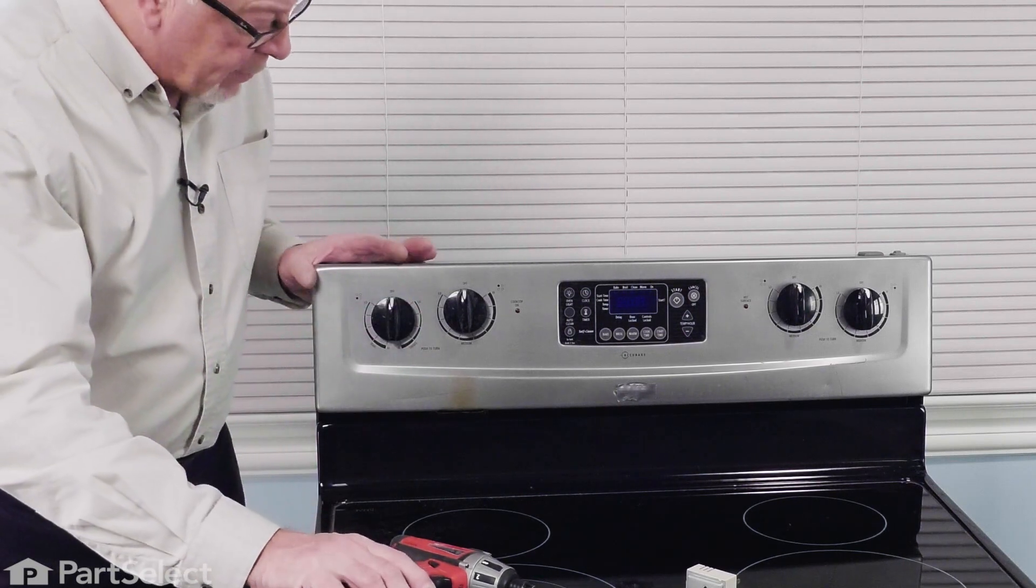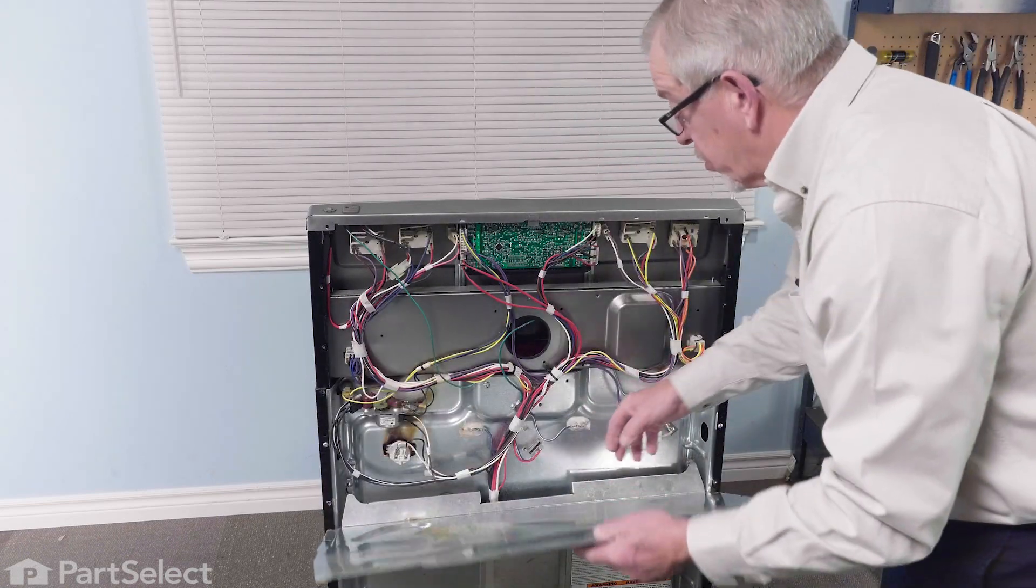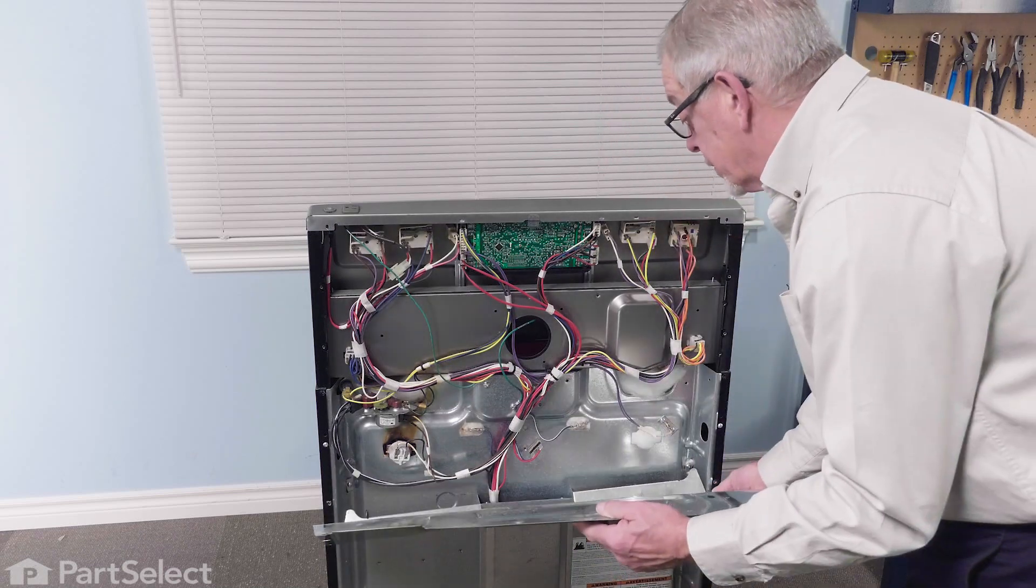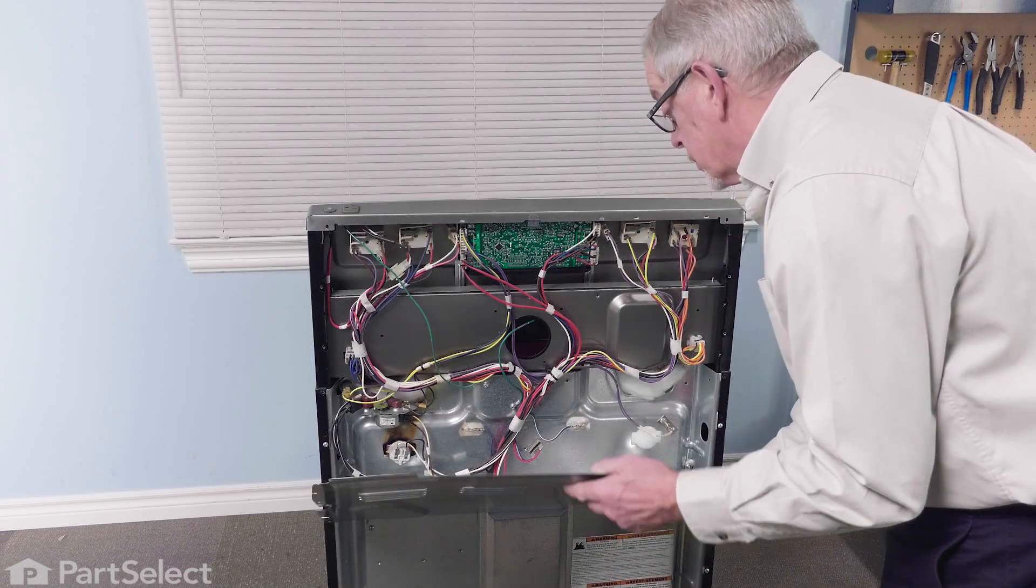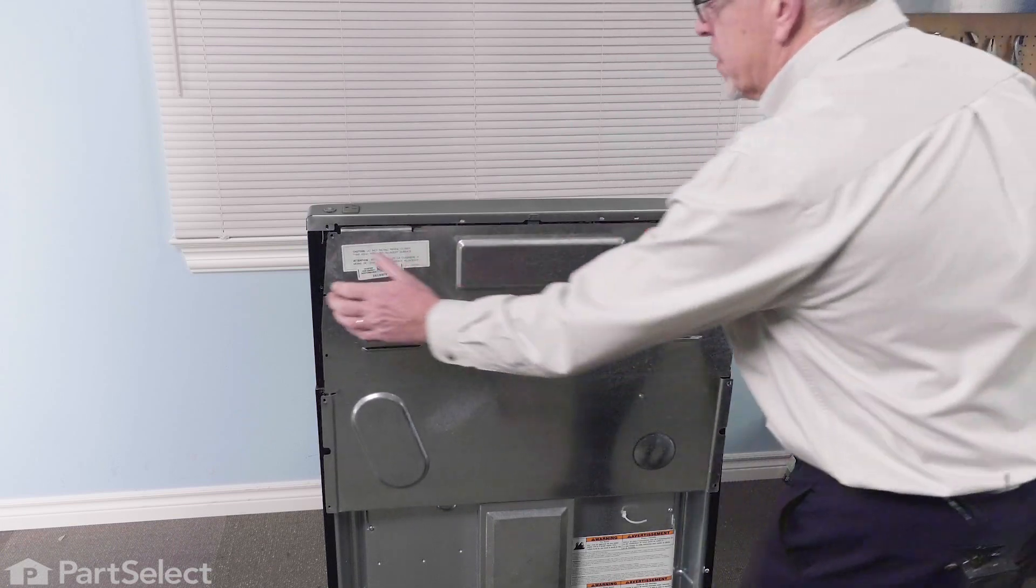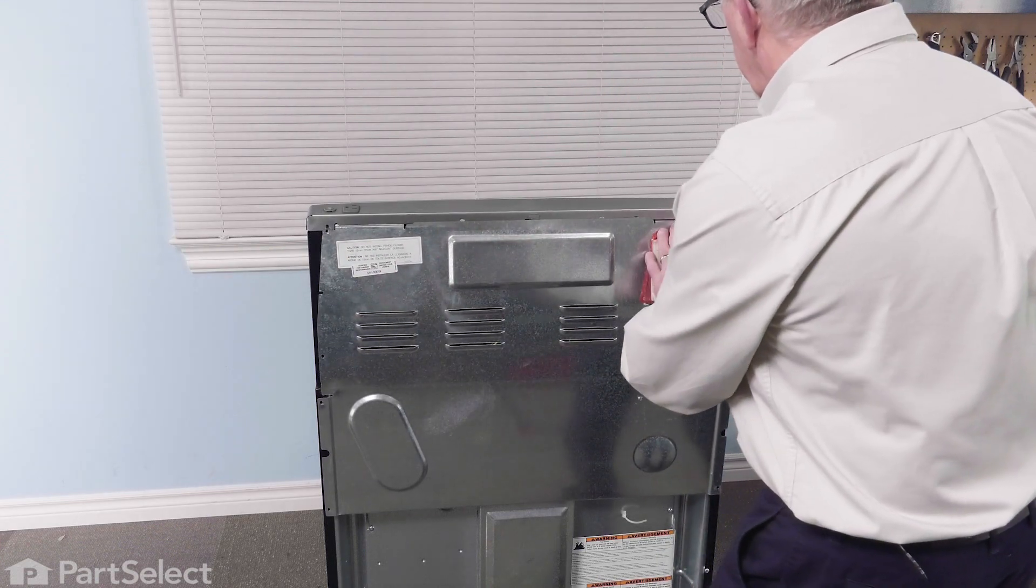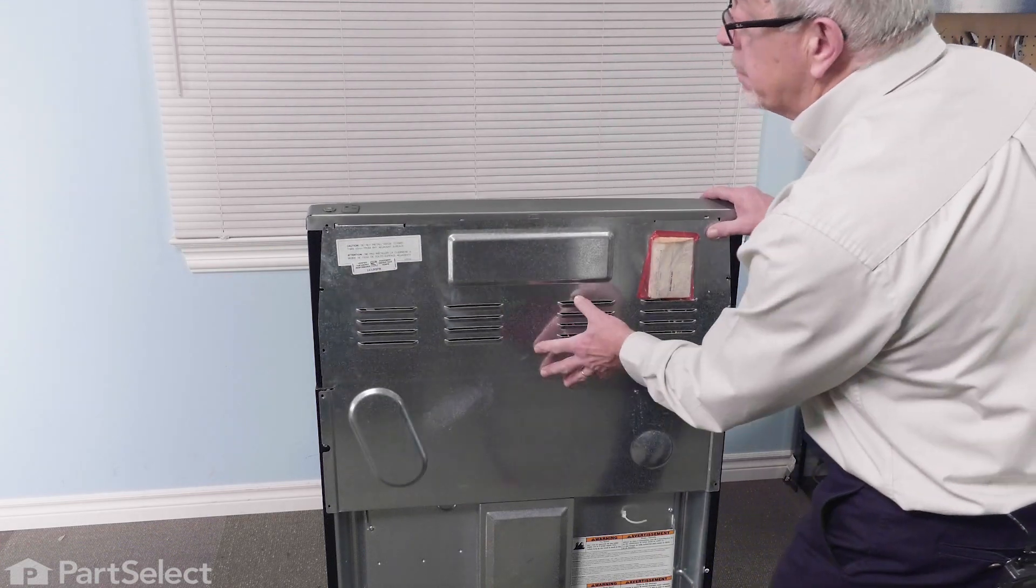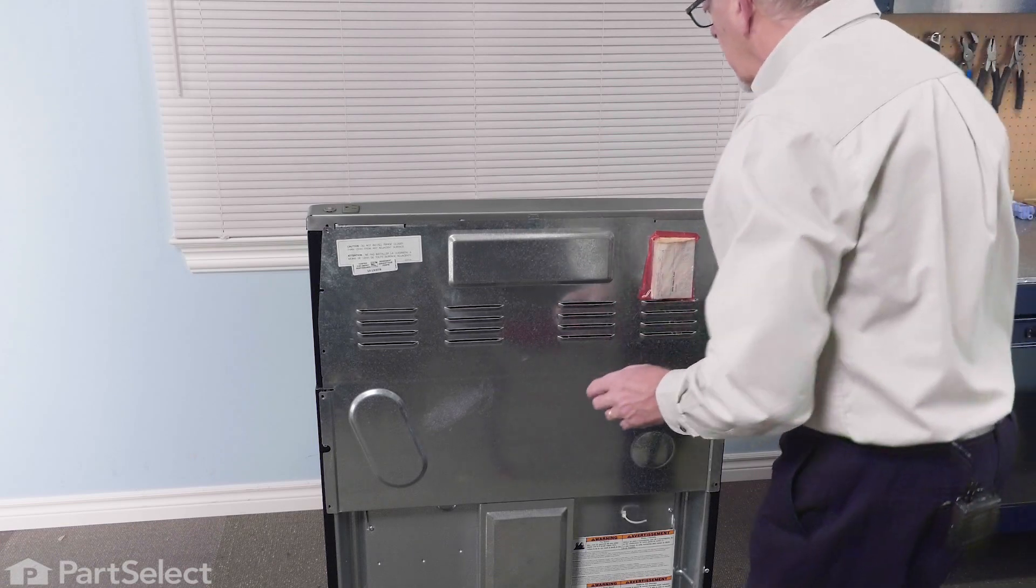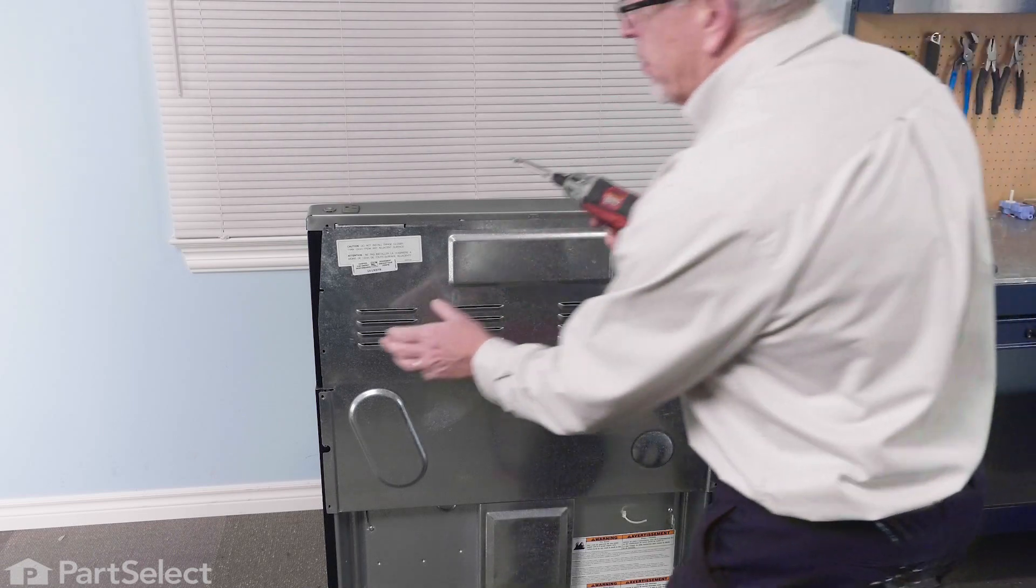Now we'll go and put the back panel on. Just make sure that we tuck this lip inside of that opening, and then fold these two tabs underneath the back of that control panel, then reinstall the mounting screws.